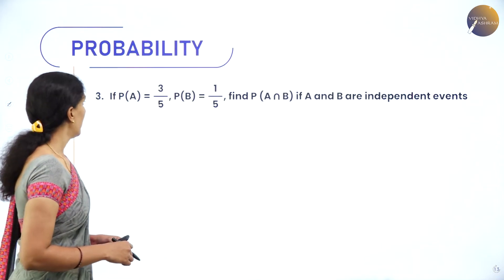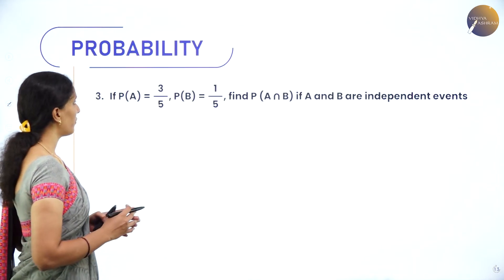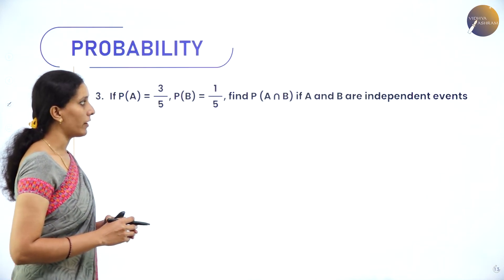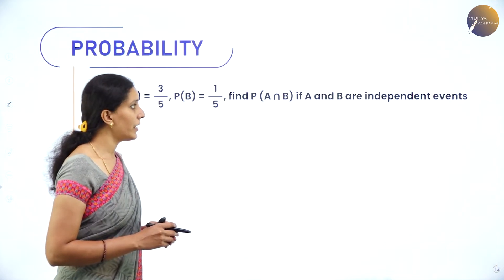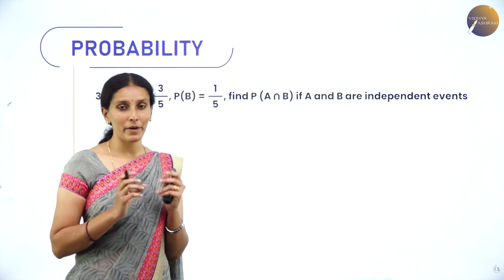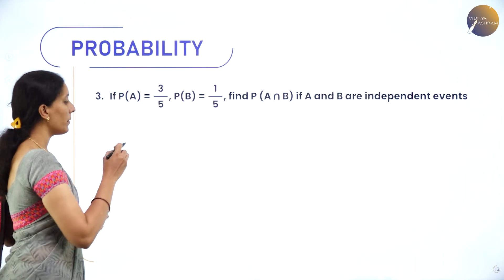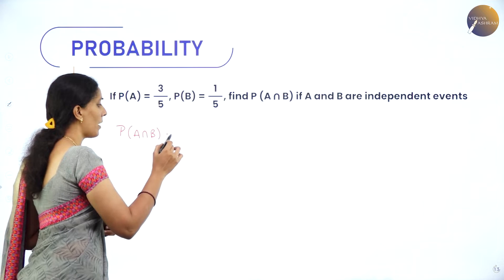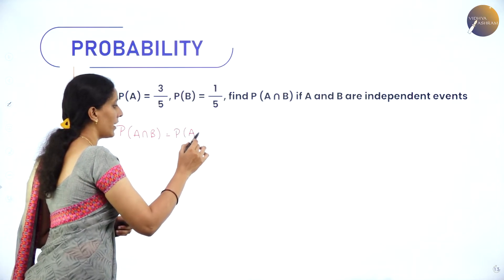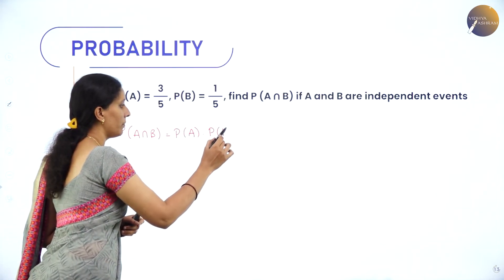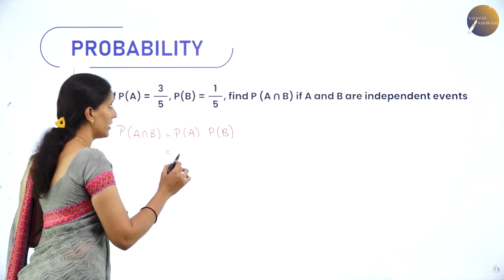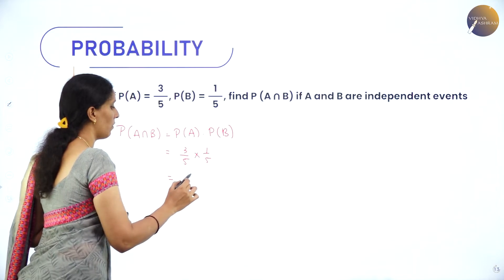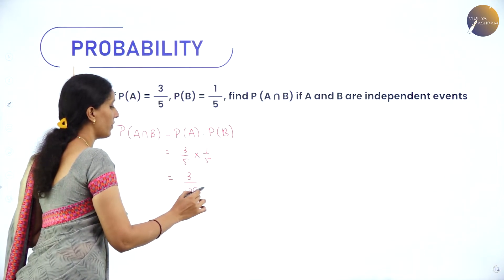Given P(A) = 3/5 and P(B) = 1/5, find P(A∩B) if A and B are independent. Since A and B are independent events, P(A∩B) = P(A)·P(B) = 3/5 × 1/5 = 3/25.